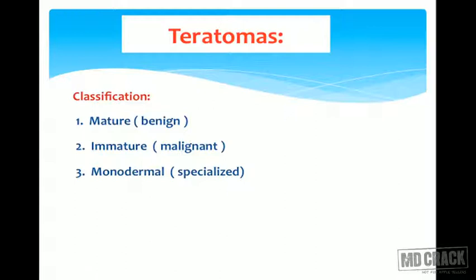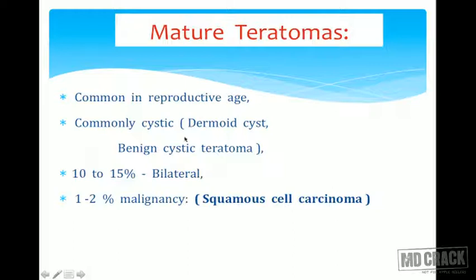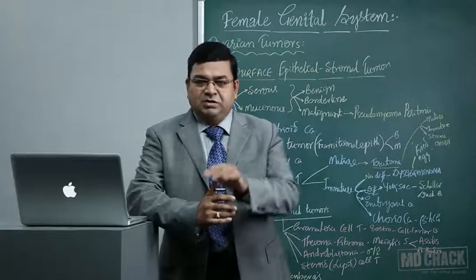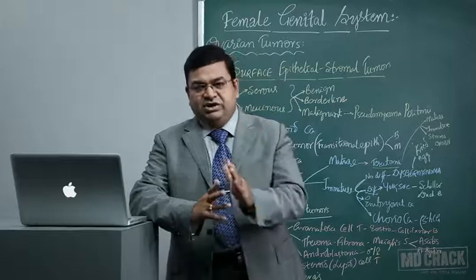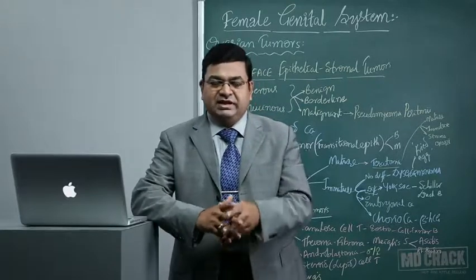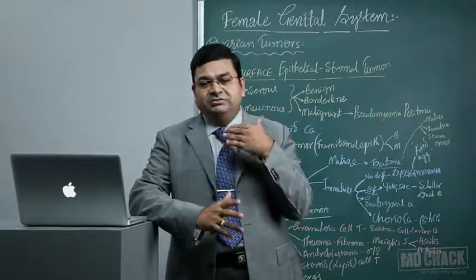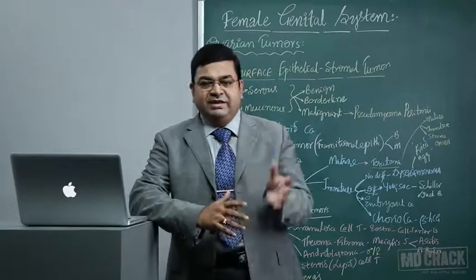Teratomas may be mature or immature; rarely monodermal. Mature cystic teratoma, also called dermoid cyst, is common in reproductive age group; about 15% are bilateral. Rarely — around 2% — benign cystic teratomas undergo malignant transformation: most commonly squamous cell carcinoma, followed by adenocarcinoma; carcinoid tumors can also occur. The solid area within a cystic teratoma is called the Rokitansky tubercle and must be extensively sampled to detect malignant foci.